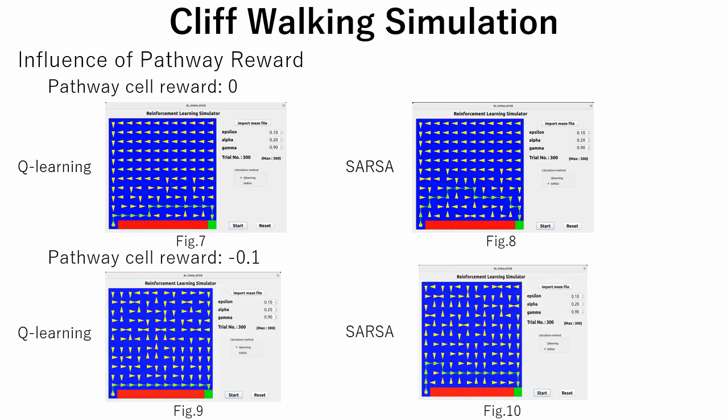Next, Q-learning and SARSA methods are tried for a maze with small negative pathway rewards of minus 0.1 and a default set of simulation parameters. Simulation results are depicted in figures 9 and 10. Now, to obtain the maximum reward, the shortest path from start to goal must be determined. Q-learning succeeded in determining the shortest path while the path calculated by SARSA is not the shortest.